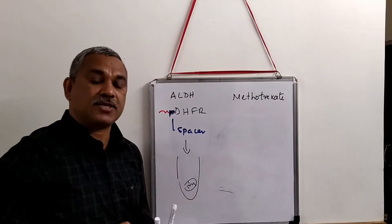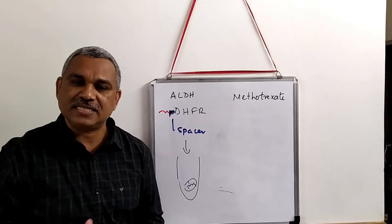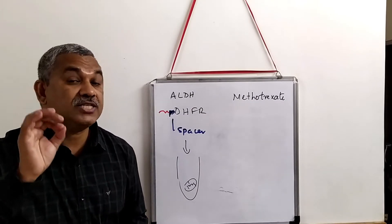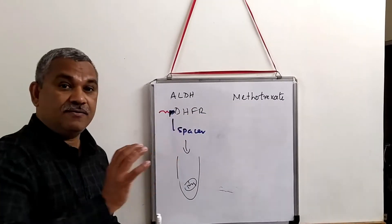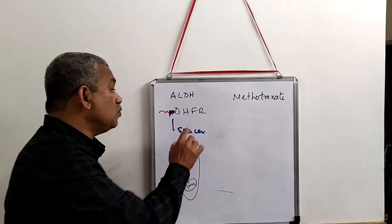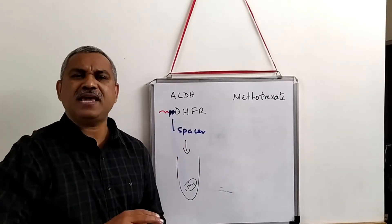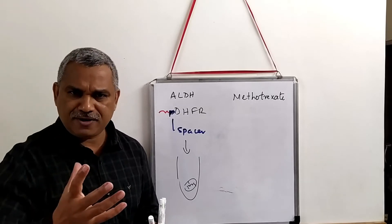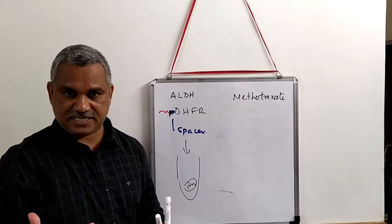Methotrexate is an anti-cancer drug which will bind to DHFR and make the enzyme adopt a folded form — in other words, it will inhibit the enzyme, locking it in a folded conformation.